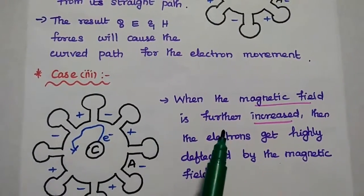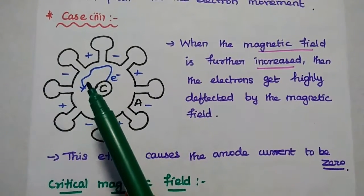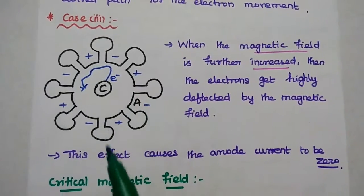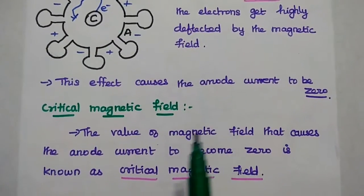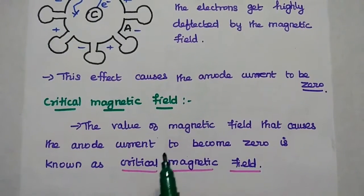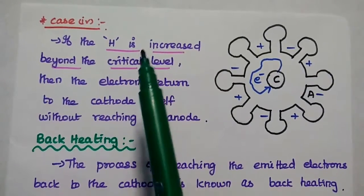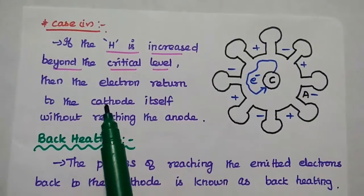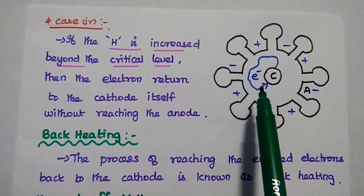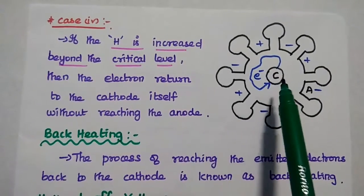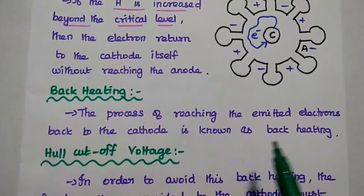When the magnetic field is further increased, the electrons get highly deflected. This effect causes the anode current to become zero. The value of magnetic field that causes the anode current to become zero is called the critical magnetic field. If the magnetic field is increased beyond the critical level, the electron returns back to the cathode itself without reaching the anode. The process of emitted electrons returning back to the cathode is known as back heating.